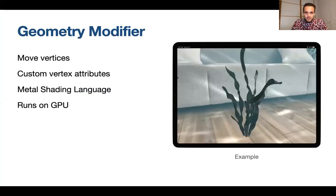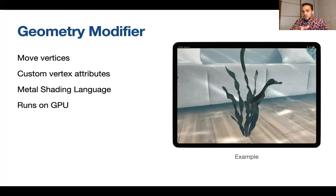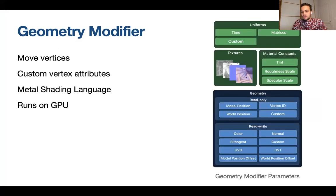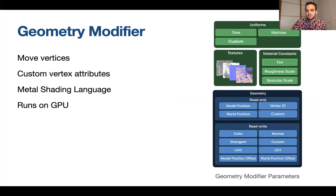The first is geometry modifiers, which allow you to move vertices and give custom vertex attributes. For example, seaweed under water can wave around. You code these using the Metal shading language and they run on the GPU.